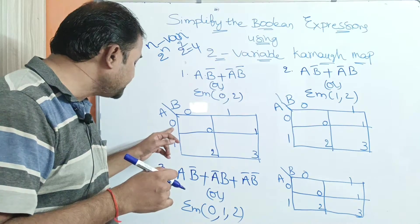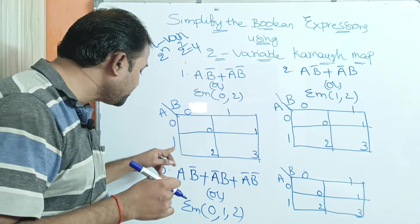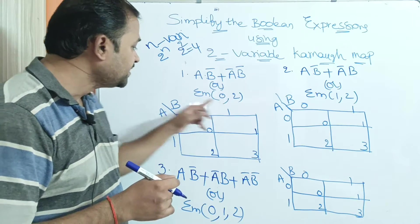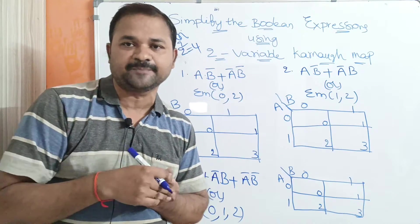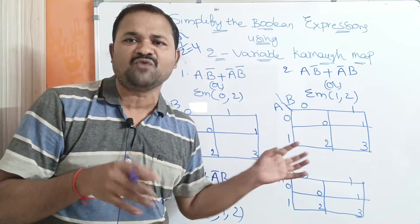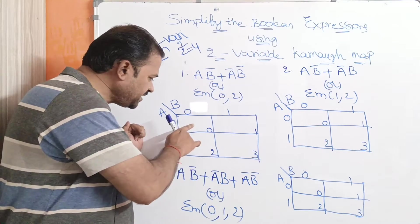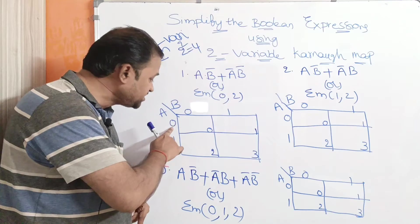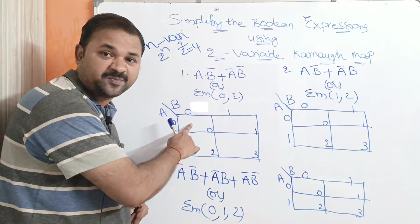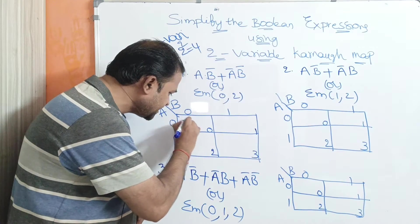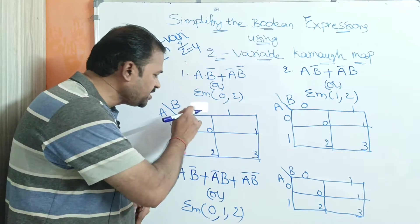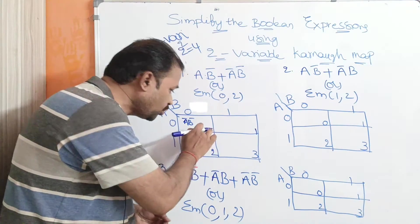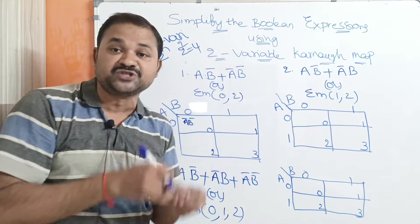When a equals 0, that means ā; when a equals 1, that means a. When b equals 0, that means b̄; when b equals 1, that means b. So totally we have four minterms. The first minterm is 0,0, which represents āb̄. In decimal notation 0,0 is 0, so this cell represents m0.